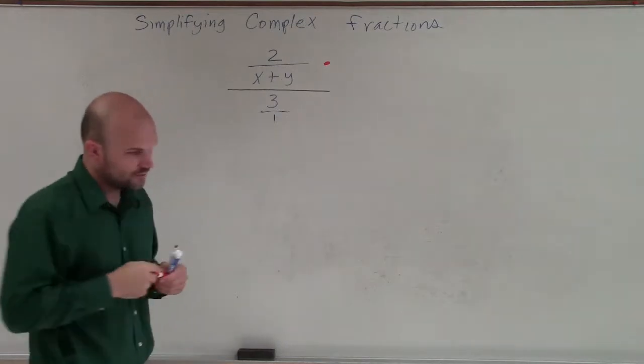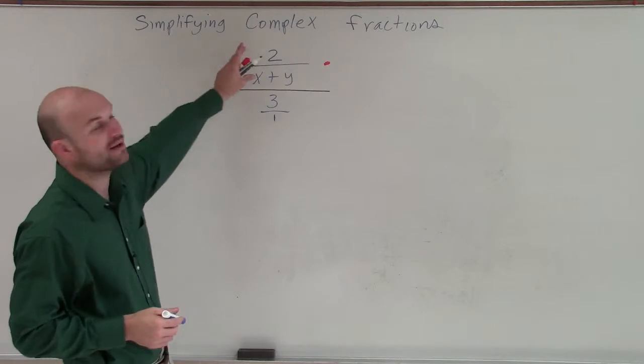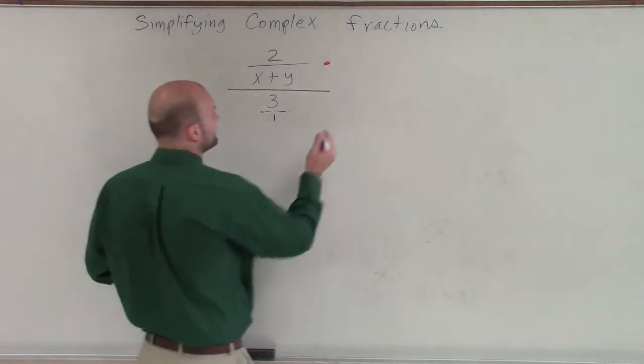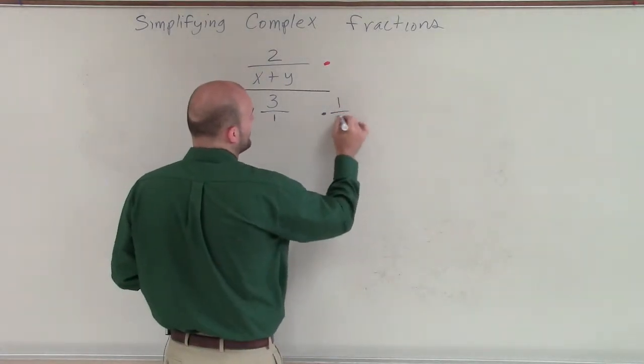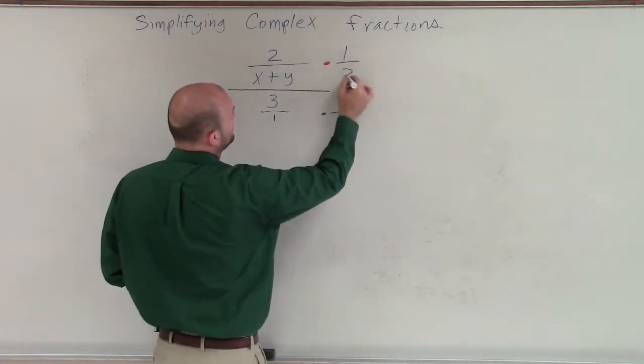The reason we multiply by the reciprocal is if I want to get this fraction off the bottom and only deal with one fraction, I have to multiply by the reciprocal. Remember, to keep equivalent fractions, whenever I multiply in the denominator, I have to multiply in the numerator.